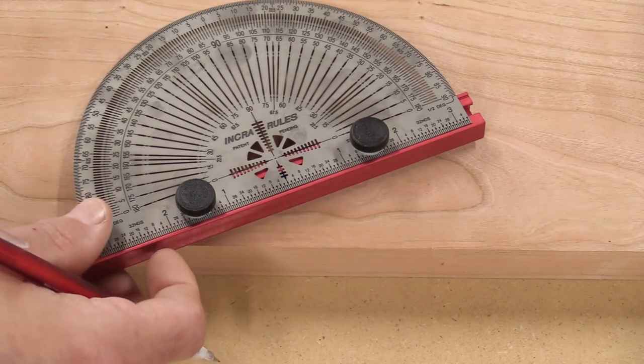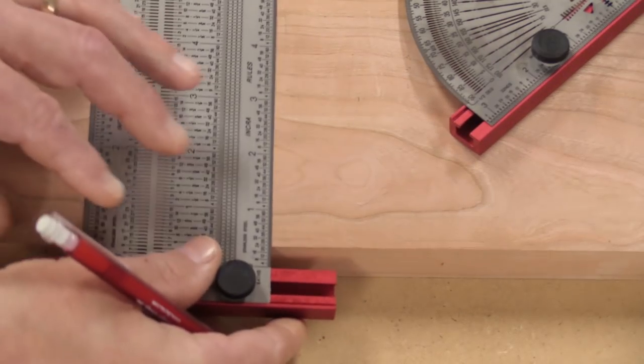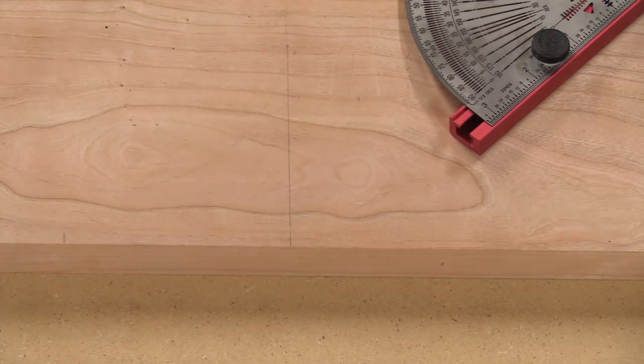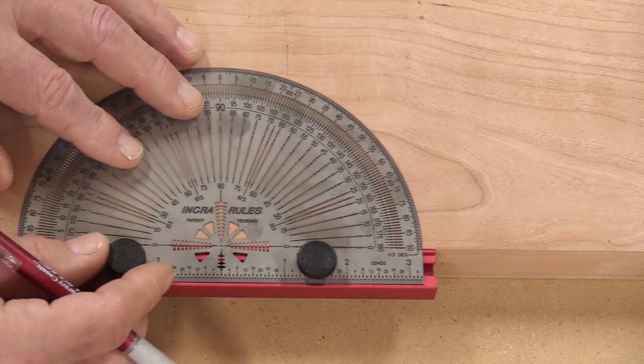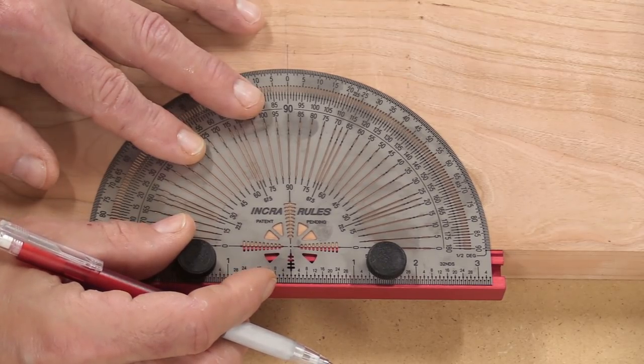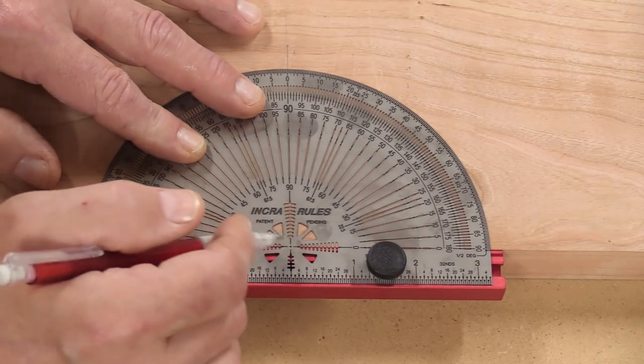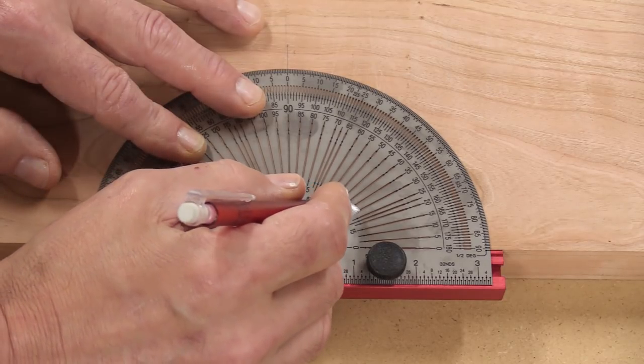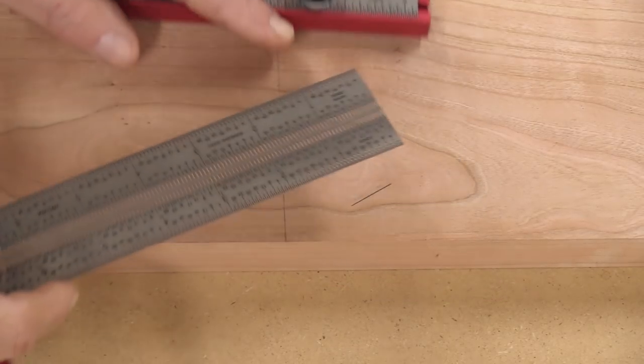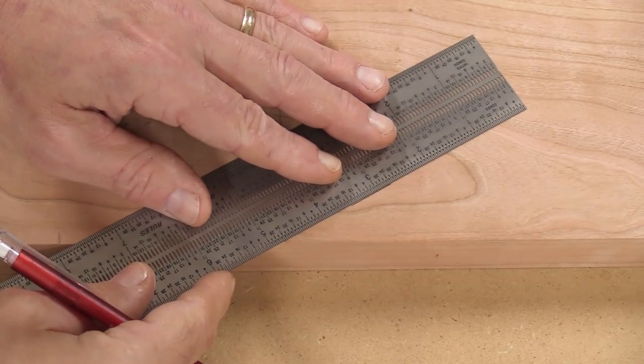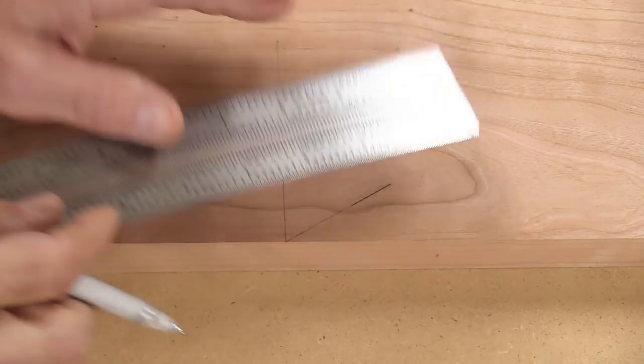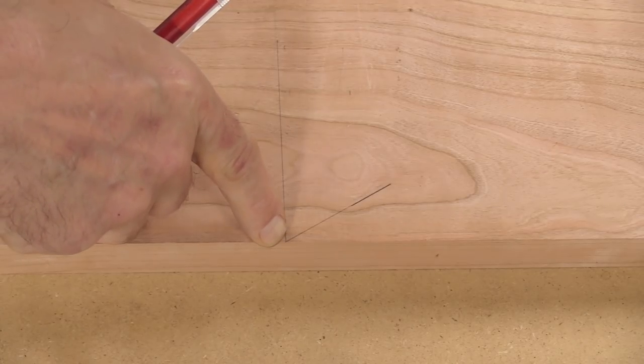Let's say I need to make a 30 degree mark. All I have to do is create a known right angle line at 90 degrees. Then I can take this, you see there's a little window right here. I can put that right in the crosshairs, I know this is perfectly at that point, and then I can just make a mark right here at 30 degrees. Now that I've got my 30 degree angle marked out I can just take my ruler, line up those points, draw a line, and I know that's perfectly 30 degrees from that point.